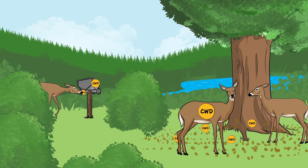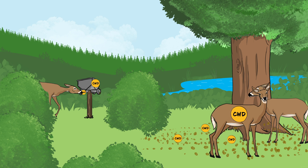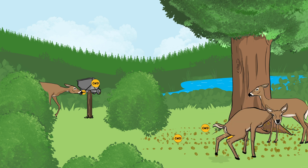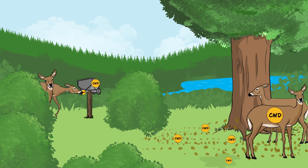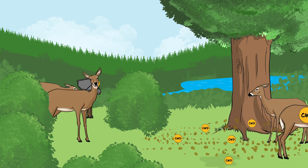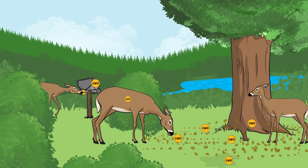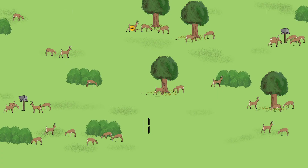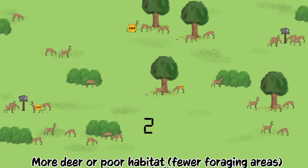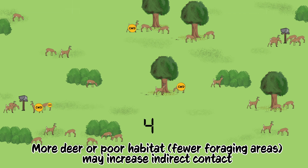Alternatively, indirect contact at feeding areas can expose deer to prions shed by infected deer in their saliva, urine, and feces. Areas with many deer or few foraging areas may increase indirect contact rates.